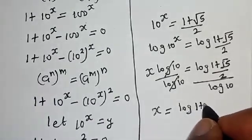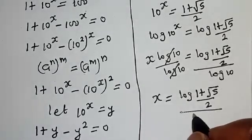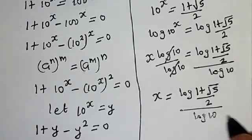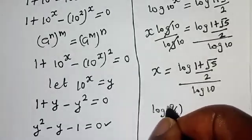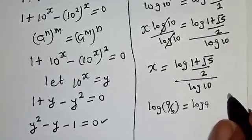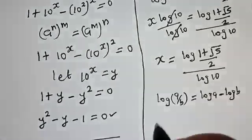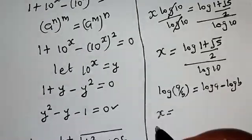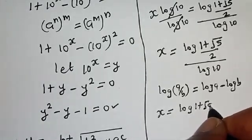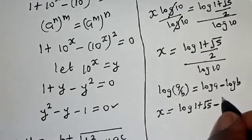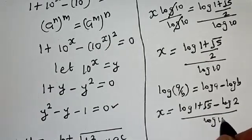So s equals log((1 + √5)/2) divided by log(10). Using the log quotient rule — log(a/b) equals log(a) minus log(b) — we get s equals log(1 + √5) minus log(2), all divided by log(10).